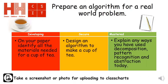We're now going to have a go at preparing an algorithm for a real-world problem. You need to complete three tasks. The first — developing level — on the paper you've got, identify all the materials needed for a cup of tea, such as a cup, etc. For the secure level, take all the things you've identified and design an algorithm to make that cup of tea, considering all the steps in the correct order — remember, the order is important. And finally, at the mastered level, explain any ways that you might have used decomposition, pattern recognition, and abstraction today.